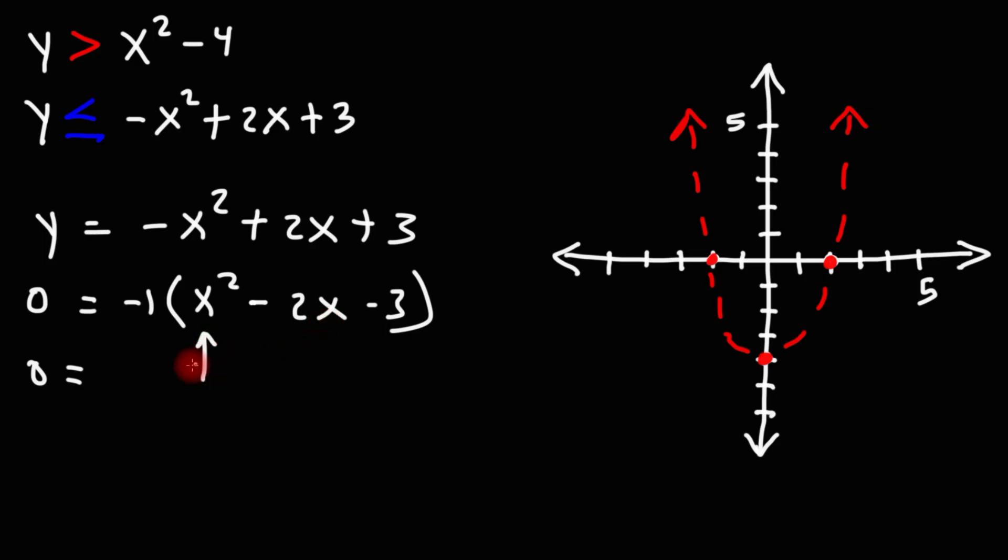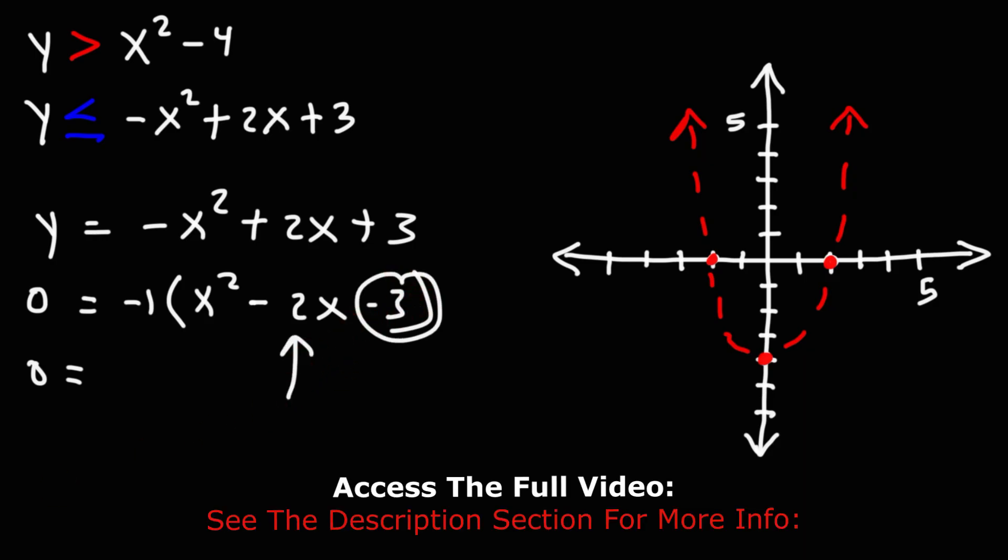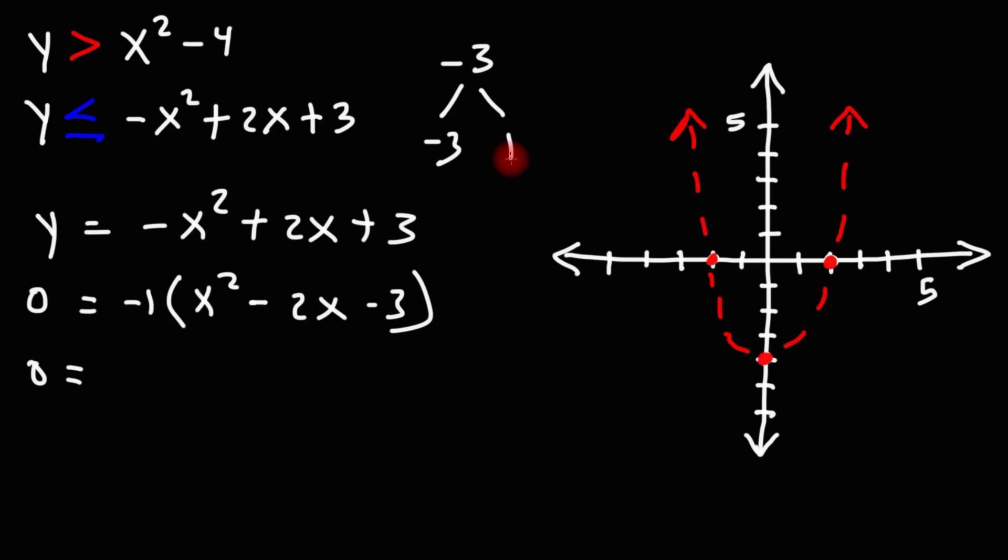So now we have a trinomial with a leading coefficient of 1. What we need to do is find two numbers that multiply to negative 3, but add to negative 2. So that's going to be negative 3 and positive 1. Negative 3 times 1 is negative 3, but negative 3 plus 1 adds up to negative 2.